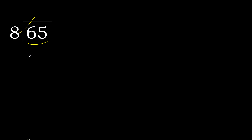8 multiplied by which number is nearest to 65 but not greater? 8 multiplied by 9 is 72, which is greater. Multiply by 8: 64 is not greater. Subtract — remainder is 1. Next.